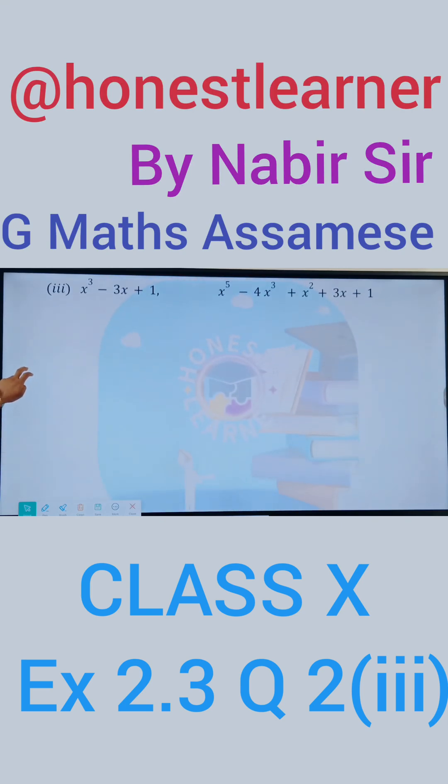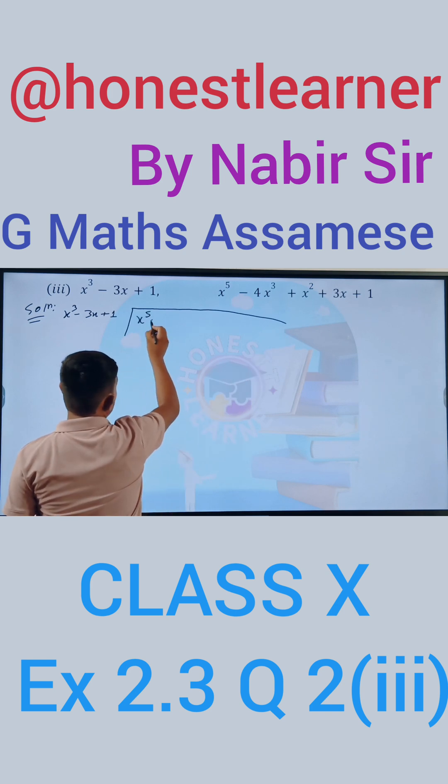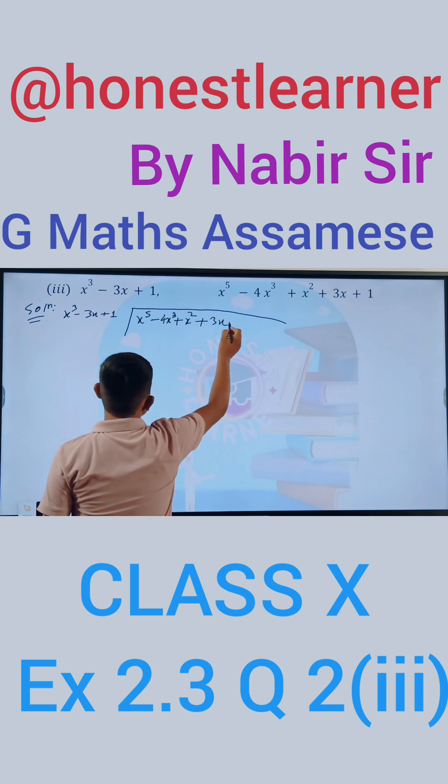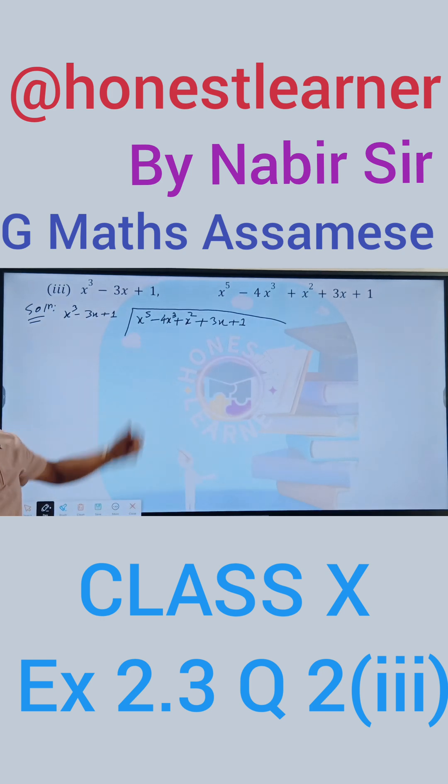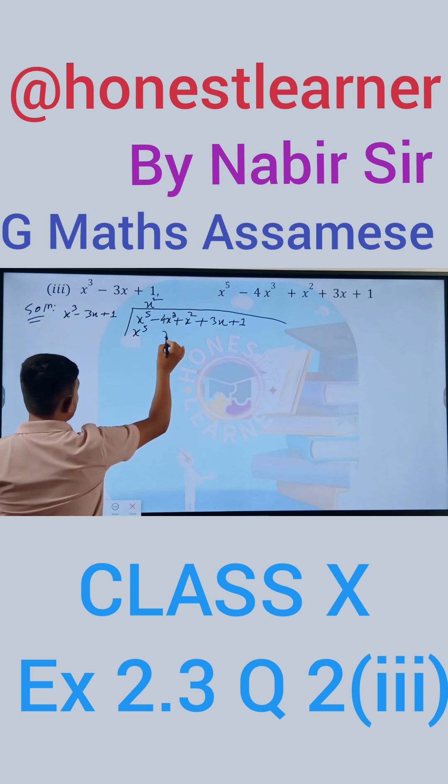I will write x cubed minus 3x plus 1, I will write x to the power 5 minus 4x cubed plus x squared plus 3x plus 1, I will write x cubed minus 5. I will write x squared plus 5. The sign is the same and number is the same, x squared is x, x squared.